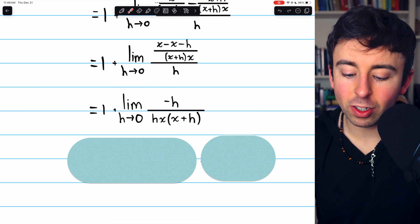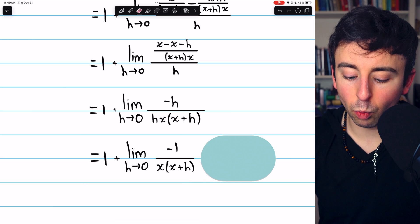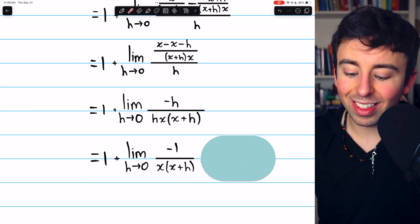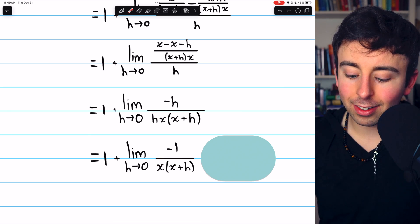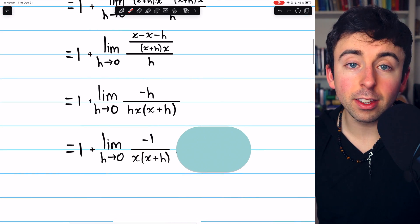Now the h and the h cancel out, and we're just left with 1 plus the limit with negative 1 in the numerator, because these h's canceled out, divided by x times x plus h.